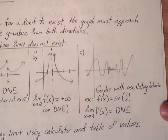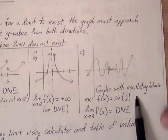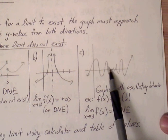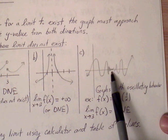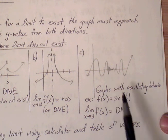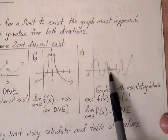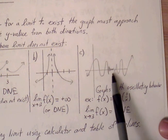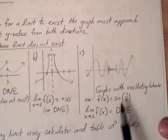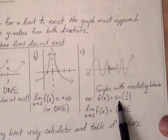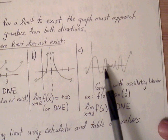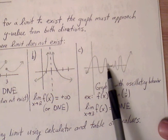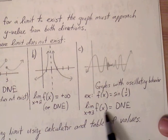Sometimes you'll also get graphs with oscillating behavior, where as we approach a specific x-value, the y-values do not agree and we cannot determine where the graph is approaching. An instance of that would be f(x) = sin(1/x). Where the graph oscillates and does not settle at a specific y-value, we say that the limit does not exist.